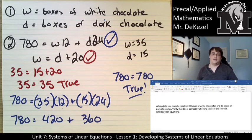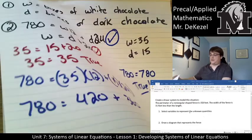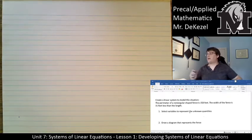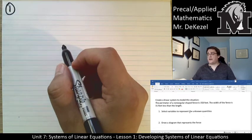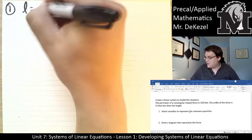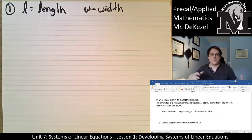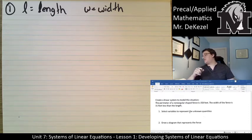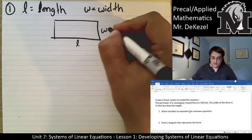That's what we're doing today — two variables, two equations, checking if a proposed solution is correct. Next problem: create a linear system to model the situation. The perimeter of a rectangle-shaped fence is 158 feet. The width of the fence is 31 feet less than the length. The two variables are going to be L for length and W for width. We'll also draw a diagram of the rectangular fence, labeling all sides with length and width.